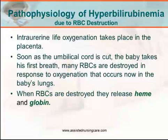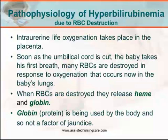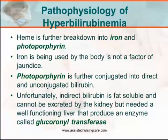When these red blood cells are destroyed, they release heme and hemoglobin. Hemoglobin is a protein which is used by the body and is not a factor of jaundice. Heme is further broken down into iron and protoporphyrin. Iron is also used by the body and is not a factor of jaundice. It is the protoporphyrin which is further conjugated into direct and unconjugated bilirubin.